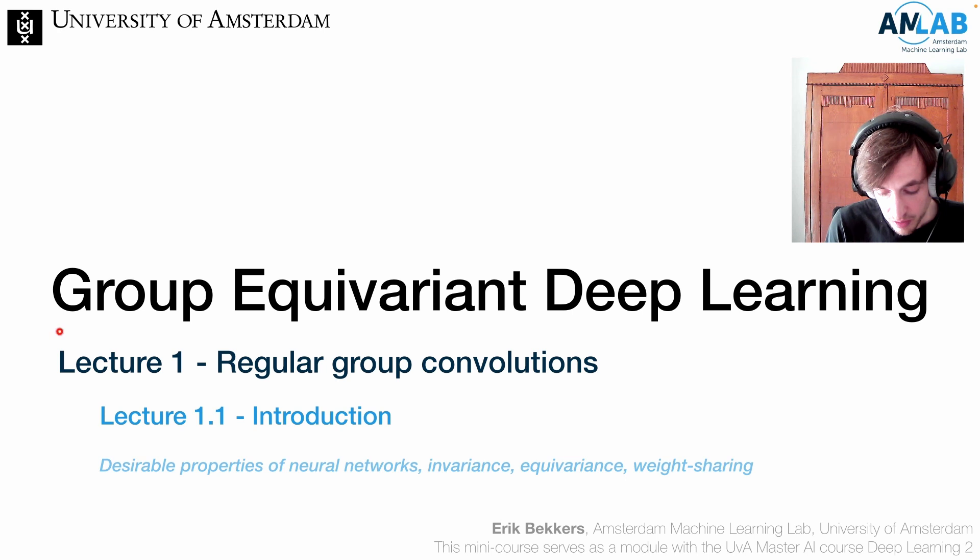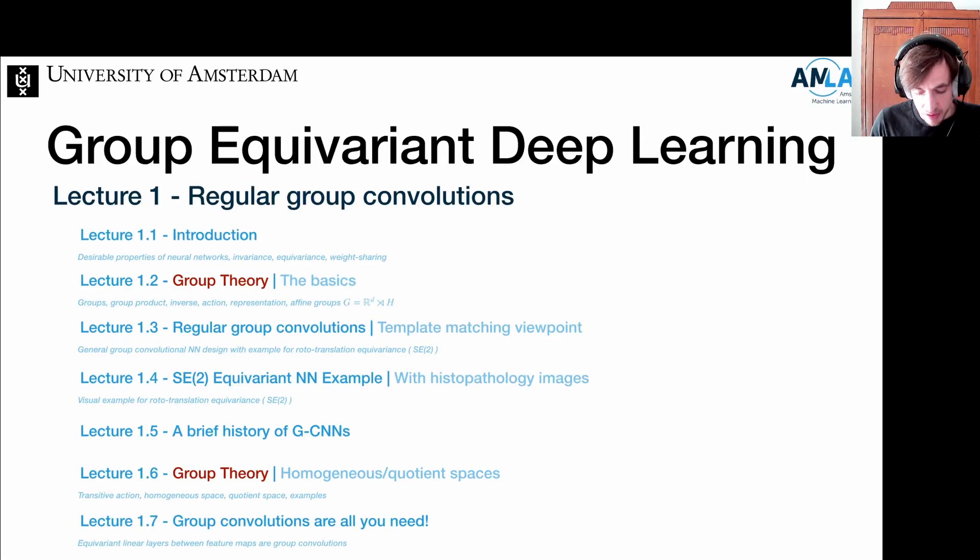This module is about Group Equivariant Deep Learning and it's split into four lectures. With this video, we kick off the first lecture by providing an introduction to regular group convolutions. I want to sketch the outline of this lecture, which is split in seven parts. I start off with a motivation coming from desirable properties of neural networks such as invariance, equivariance and weight sharing.